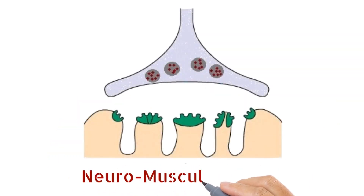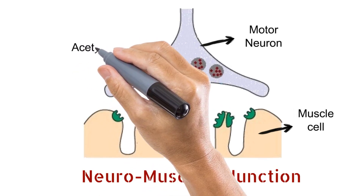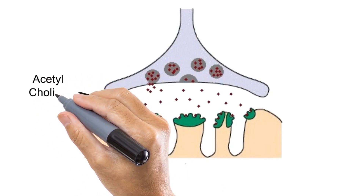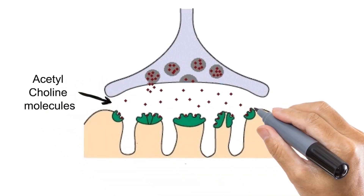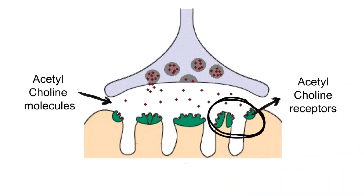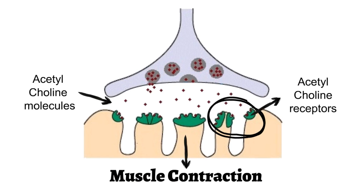This is the structure of the neuromuscular junction. This is the motor neuron. This is the cell membrane of the muscle cell. The motor neuron has vesicles filled with a neurotransmitter called acetylcholine. When the motor neuron receives the signal, it releases acetylcholine molecules into the neuromuscular junction, where they bind to acetylcholine receptors. In response to this binding, the muscle cells get contracted, enabling us to carry out functions like walking, talking, breathing, and even keeping our eyelids open.